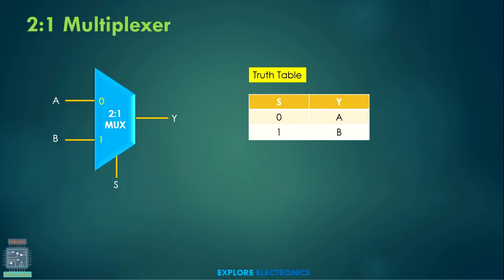First, let us see what is a 2-to-1 multiplexer. A 2-to-1 multiplexer is a data selector. Depending on the select line, the data available at the input will be selected as output. When the select line S is 0, A is the output; when S is equal to 1, B will be the output.